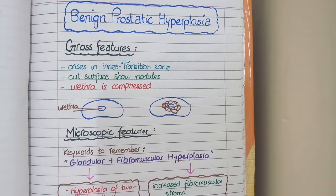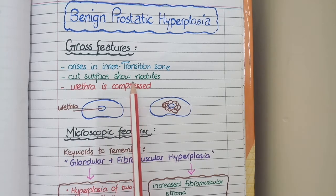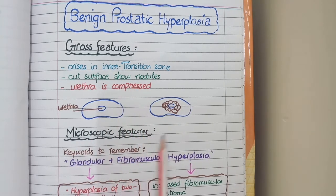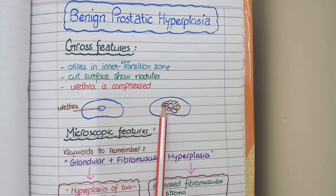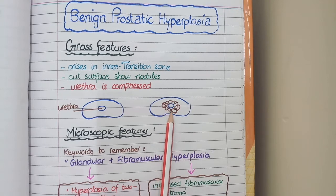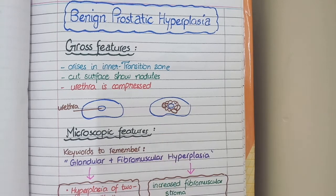Secondly, if you take a cut section of the prostate, benign prostatic hyperplasia will be present in the form of nodules, as you can see in this diagram. That is why it is called nodular hyperplasia.